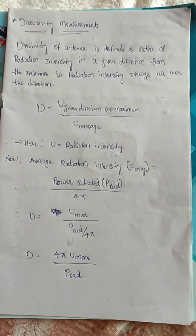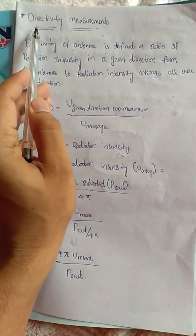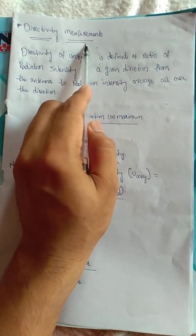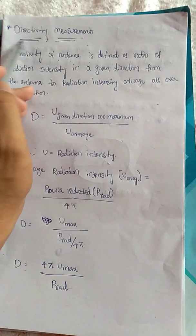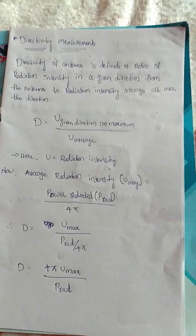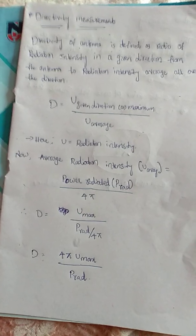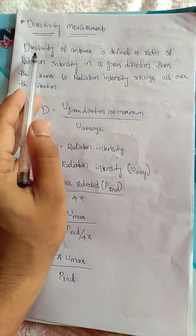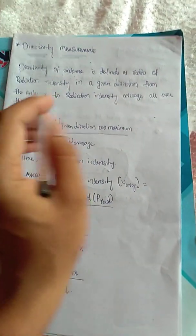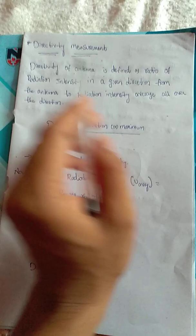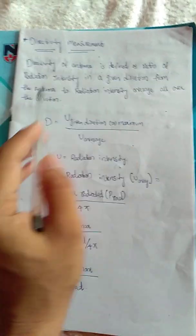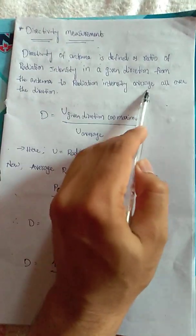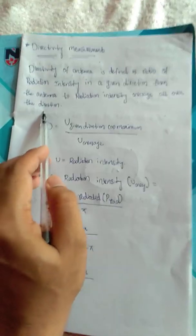Today we are going through the topic called directivity measurement. You are already familiar with this topic called directivity — we have discussed it in the first unit. The directivity of the antenna is defined as the ratio of radiation intensity in a given direction from the antenna and the radiation intensity averaged over all directions.